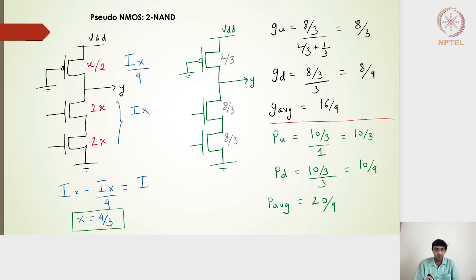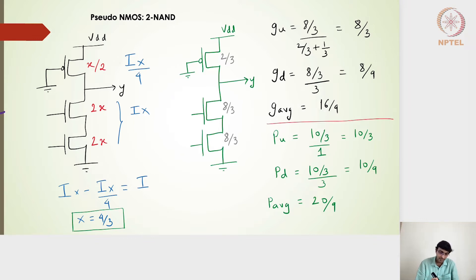For the most primitive two-input NAND gate, the same 2/3 comes on the PMOS pull-up side. If 4/3 represents x, then the PMOS will be x/2. On the pull-down side with two transistors, the sizes must sum to give an equivalent transistor of 4/3, or a value of x.